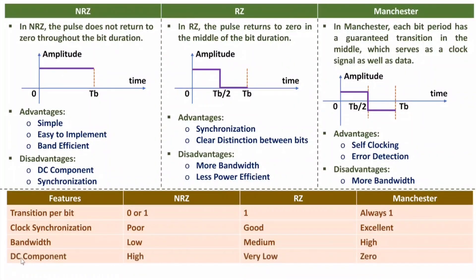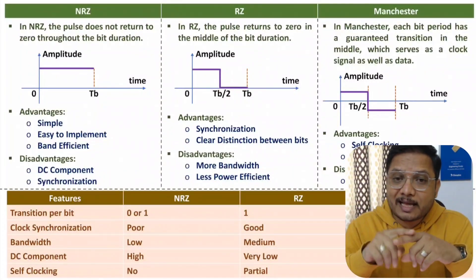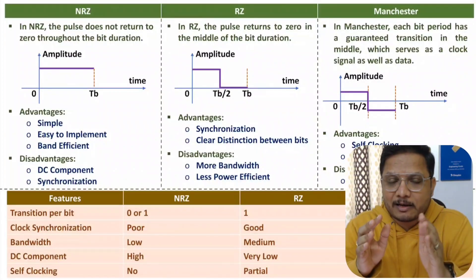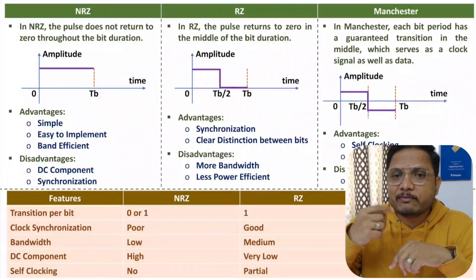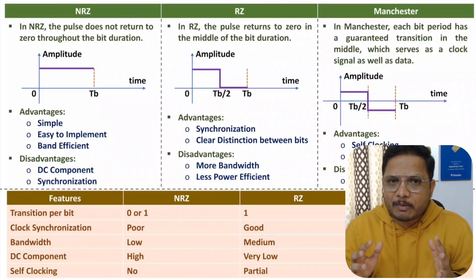Comparing in terms of DC component: NRZ has a higher DC component, which is a disadvantage. RZ has a very low DC component. Manchester has zero DC component always. For self-clocking: it is not available with NRZ, partially available with RZ, and fully available with Manchester. In Manchester, the clock is inherently integrated inside the data, so you don't need to transmit a separate clock signal.